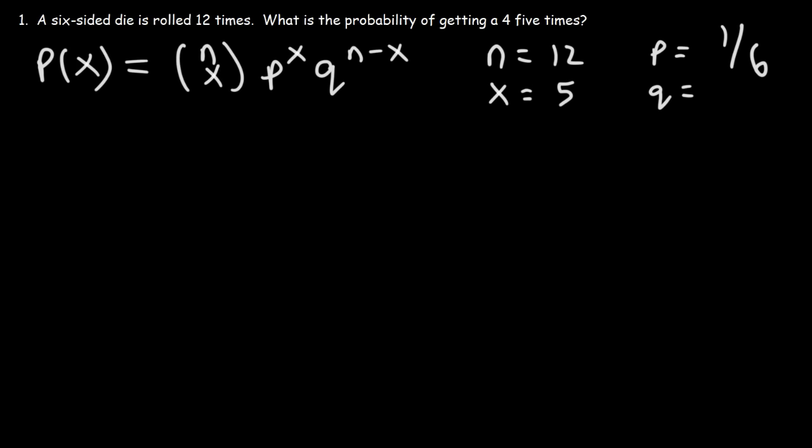Now let's calculate q — the probability that the event will fail. What is the probability that we will not get a 4? Out of the six numbers we can get, five of those numbers do not represent a 4. So the probability of not getting a 4 is 5 out of 6.